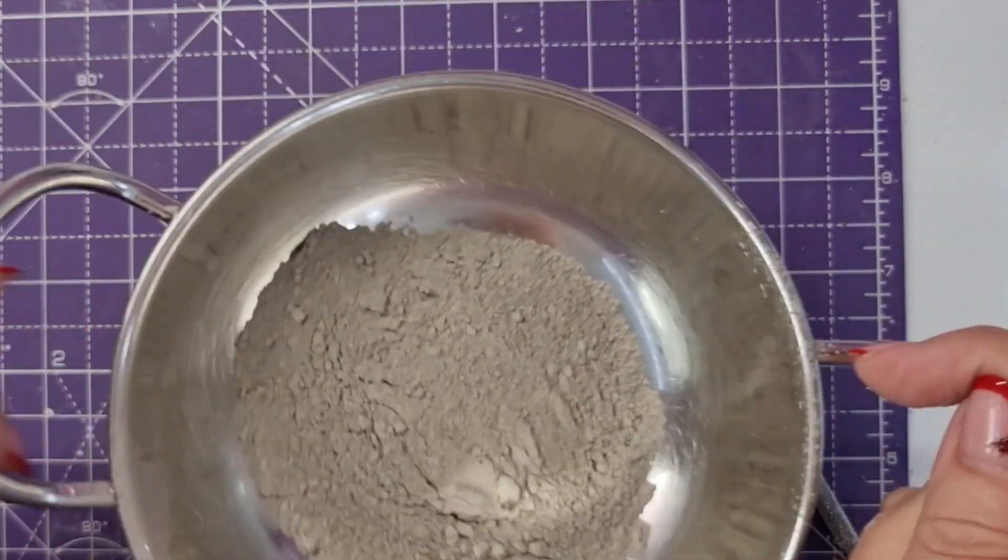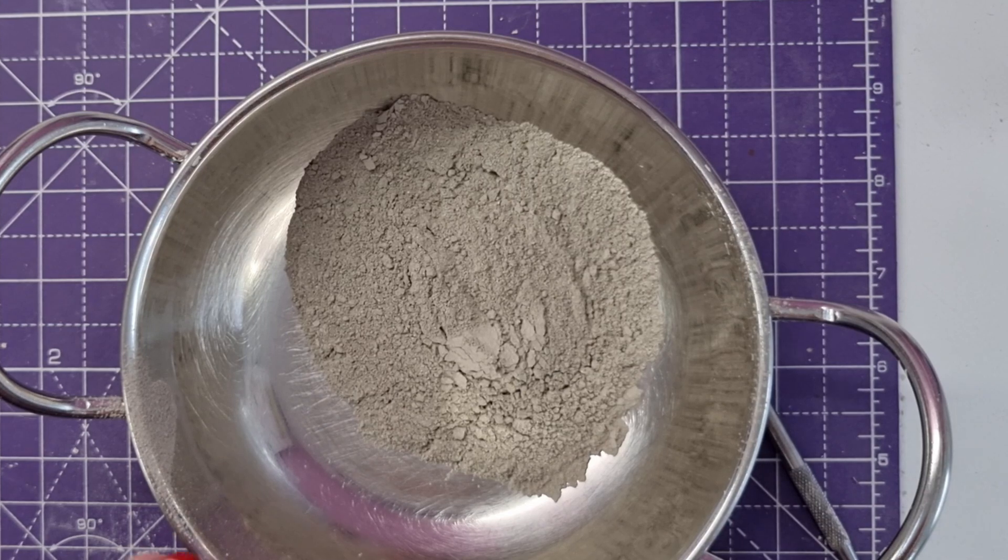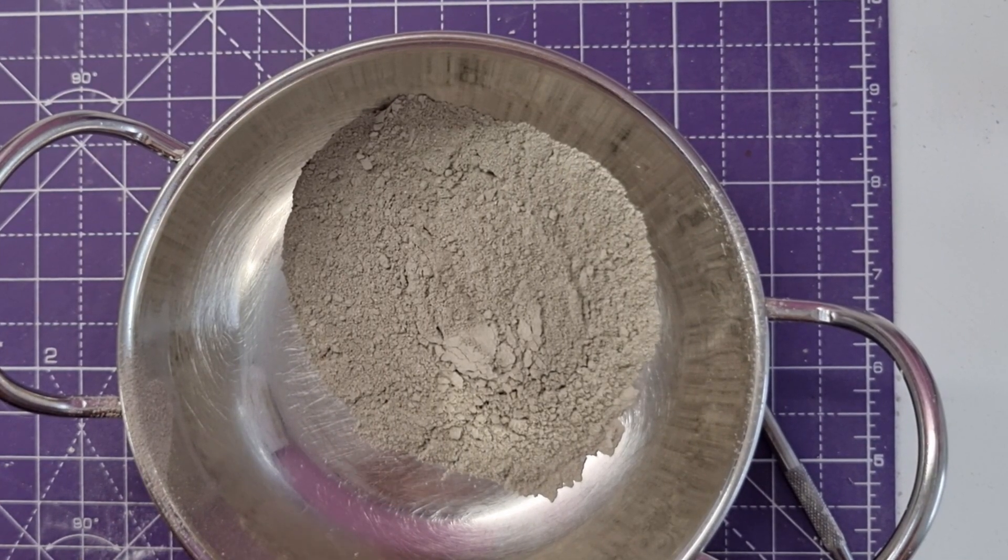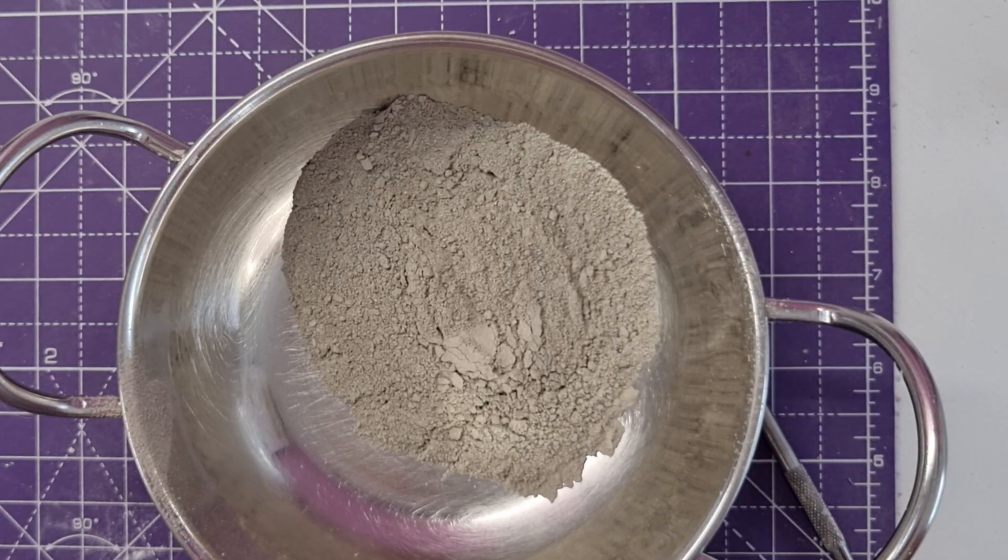This is a hundred grams of fine silver powder which I have passed through a sieve before I make my clay. That's how I always reconstitute - I always pass through a sieve.